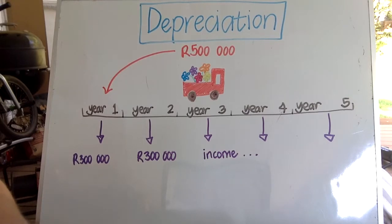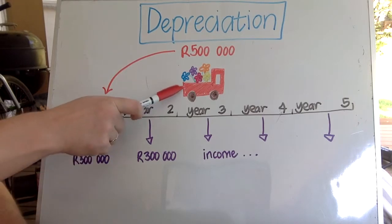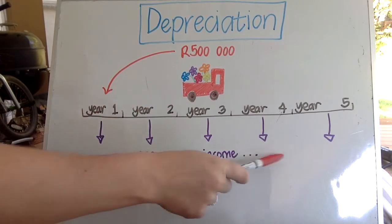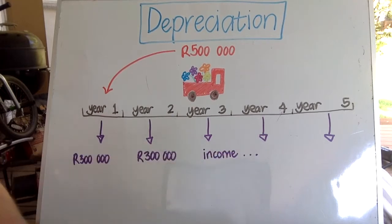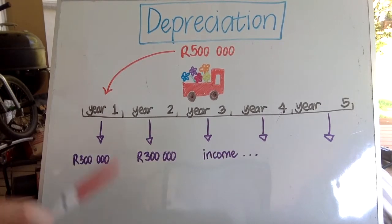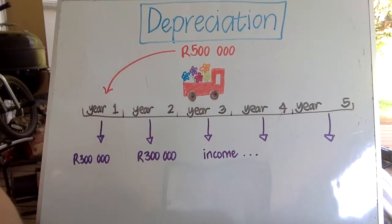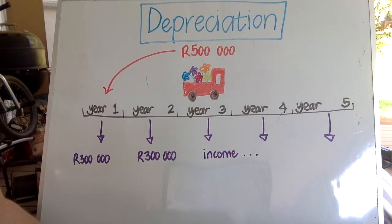Keep in mind that assets are those things which a business has control over and are used to generate an income. As you can see, this truck is generating an income or an economic benefit over a number of years. If you had to just say the truck is 500,000 Rand and leave it at that indefinitely, that means at the end of year five you are saying you still have a truck worth 500,000 Rand, which is obviously not the case because we're assuming the truck is so dilapidated and old that it can't puff another breath and you have to dispose of it.